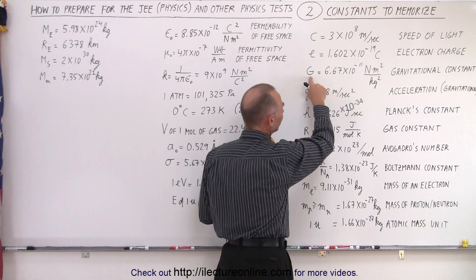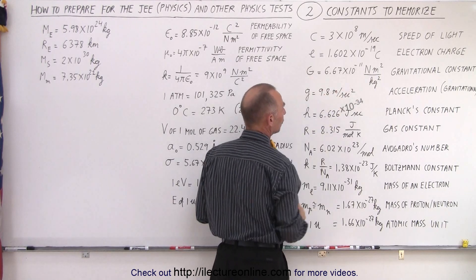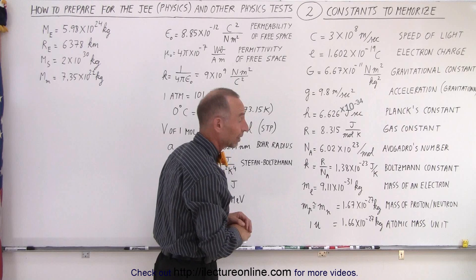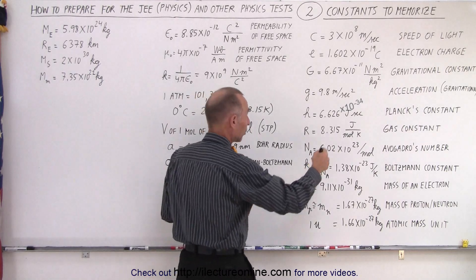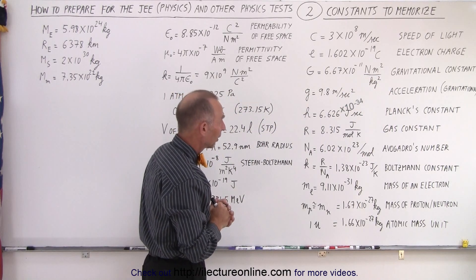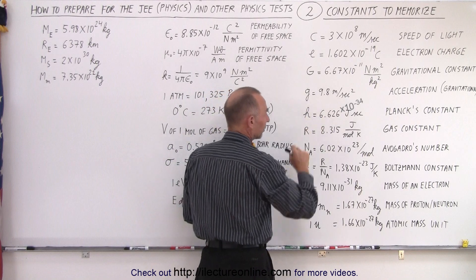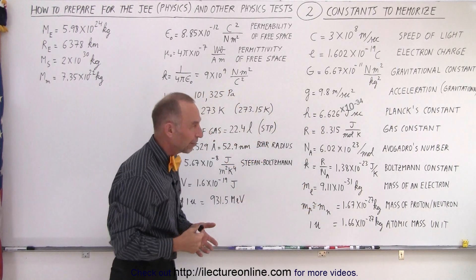Here we have the universal gravitational constant, 6.67 times 10 to the minus 11 newtons meters squared per kilogram squared, unless you put it in vector format, then it would be meters cubed. In simple magnitude, it's correct. The acceleration due to gravity, 9.8 meters per second squared. Most of the time we can simply round it off to 10.